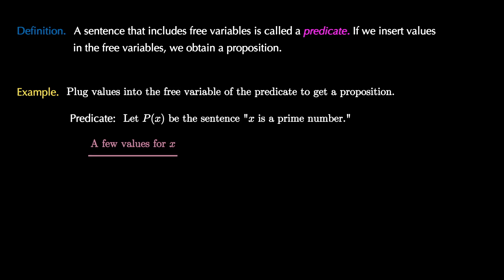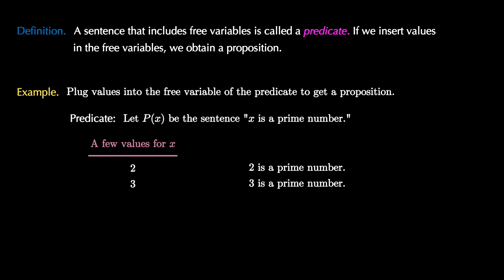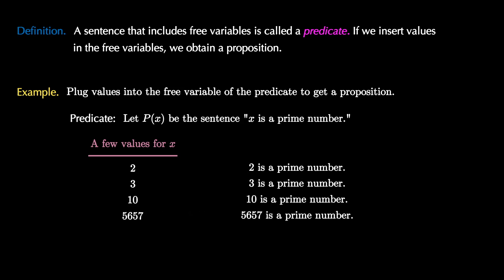Here are a few values of x that we can insert. If we put 2 in, we get the proposition '2 is a prime number,' which is true. If we put 3 into x, we get '3 is a prime number,' which is also true. If we put 10 into x, we get the false proposition that '10 is a prime number.' We can also put 5,657 into x to get a true proposition, and we can even put a value like 'car' into x to get the proposition 'car is a prime number,' which is false because car isn't even a number.